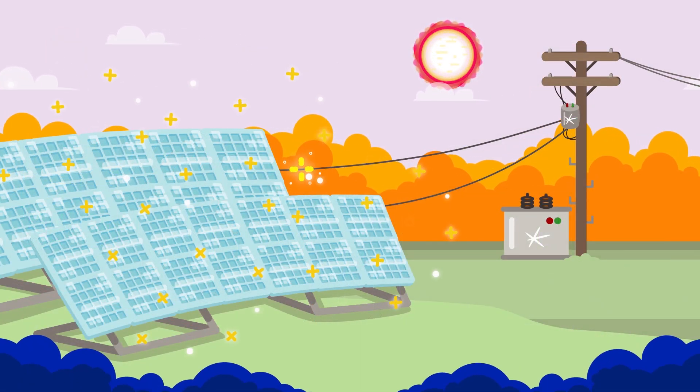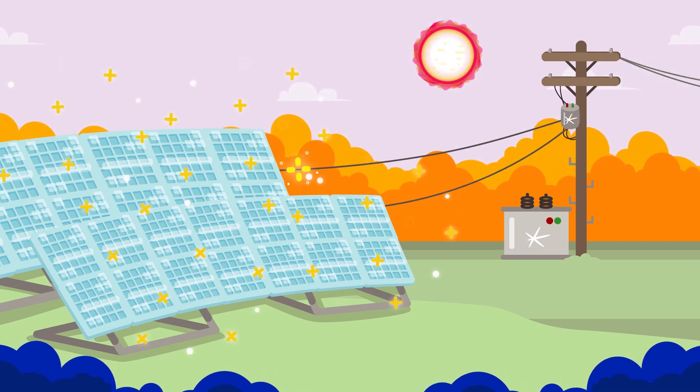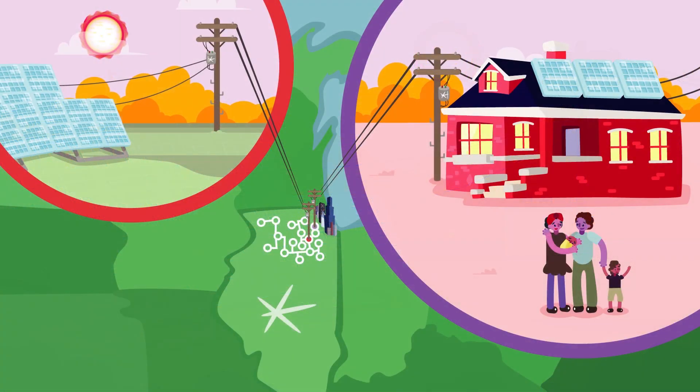Community solar is a solar farm with lots of solar panels. These solar panels are using the sun to make clean energy. You and your family can join other people who are using the solar farm too.